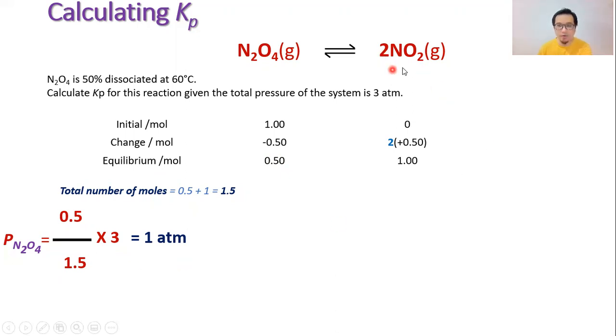The same thing: we use the number of moles of NO2, which is 1 mole at equilibrium, divide with the total number of moles at equilibrium which is 1.5, multiplied by 3. With this you get the answer to be 2 atm. These are the respective partial pressures of N2O4 and NO2.